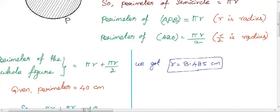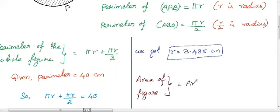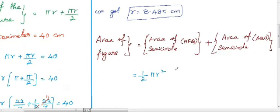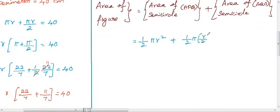The area of the shaded region equals the area of the bigger semicircle APB plus the area of the smaller semicircle AQO. The area of the bigger semicircle is πR² divided by 2, where R is the radius. The area of the smaller semicircle, whose radius is R by 2, becomes 1 by 2 into π into (R by 2) squared.